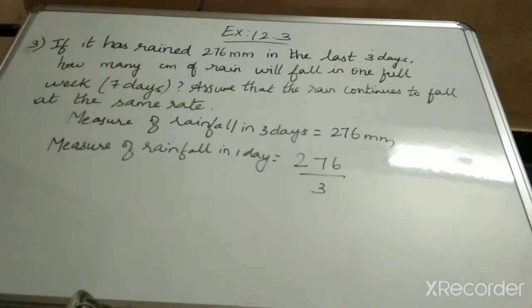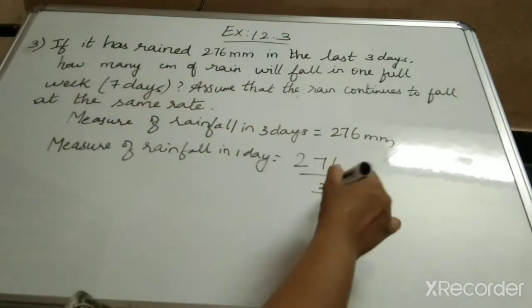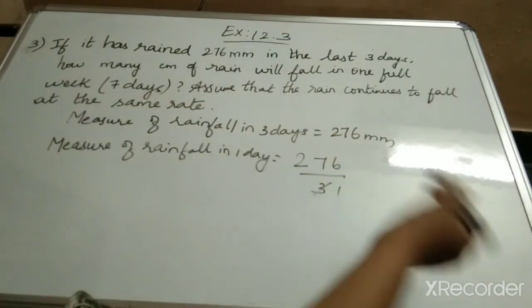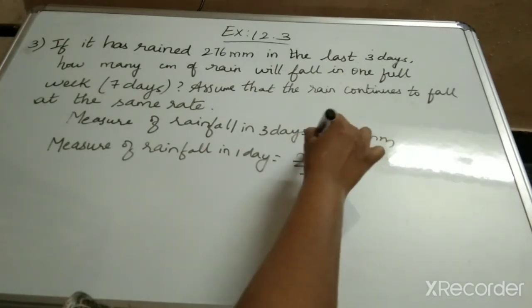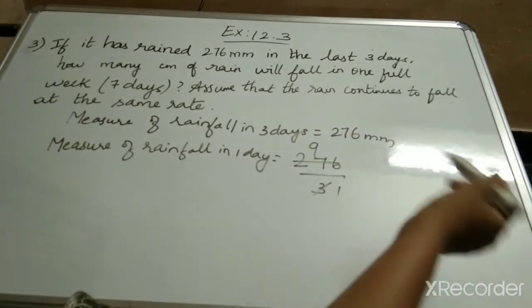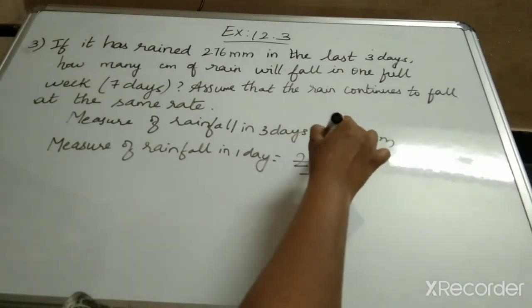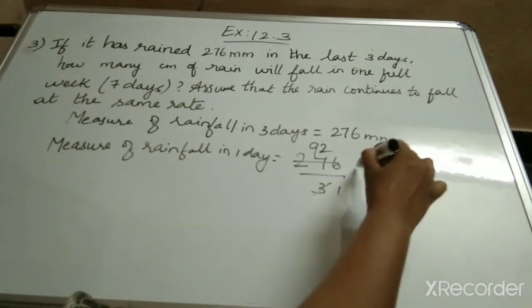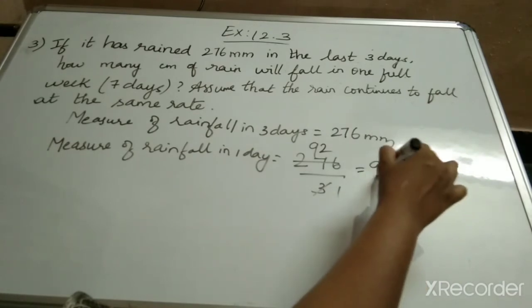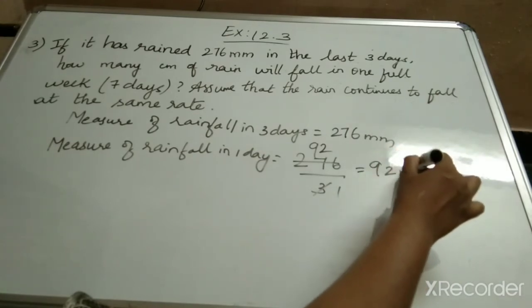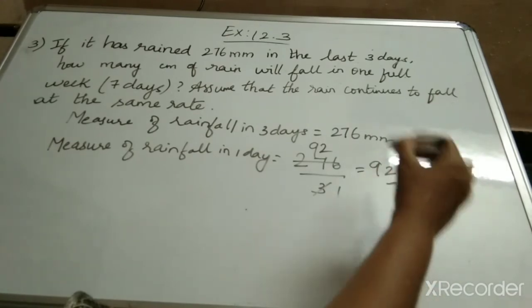Now 3 table — can I cancel them? So 3 ones are 3, 3 nines are 27, 3 twos are 6. So 92 divided by 1 — that is equal to 92 mm.